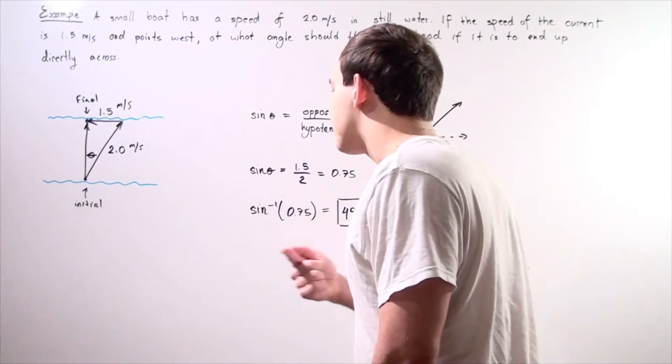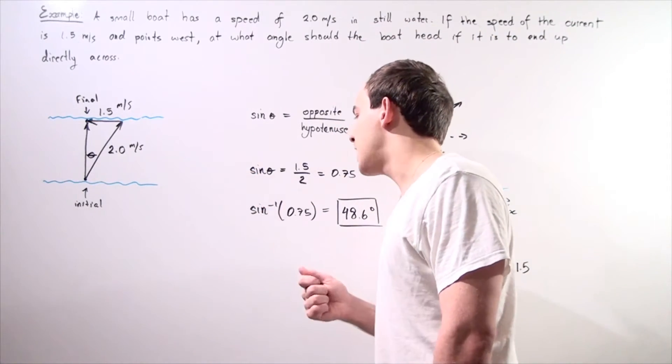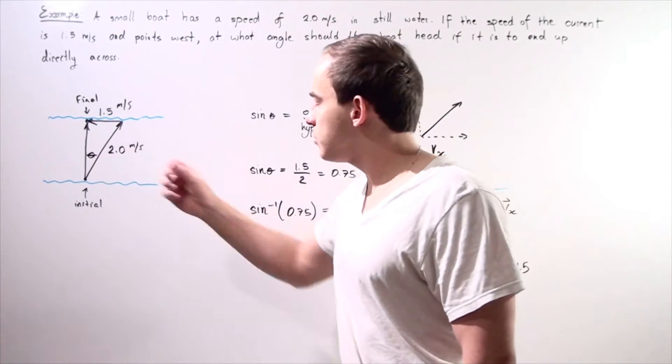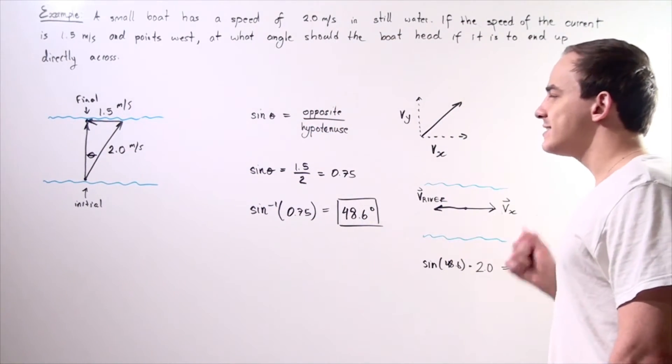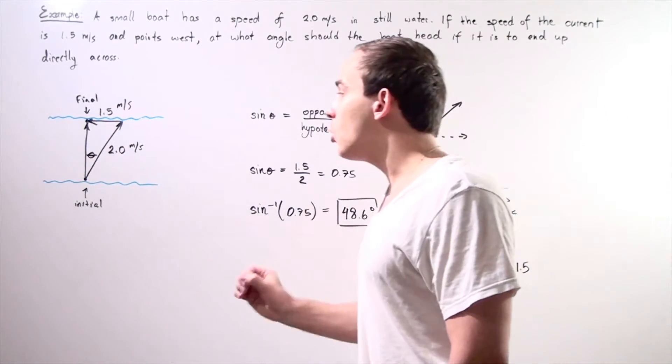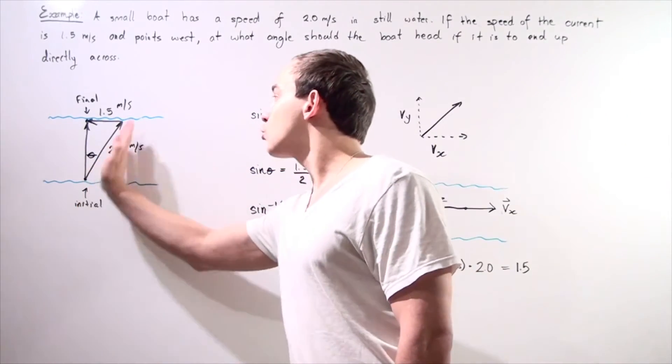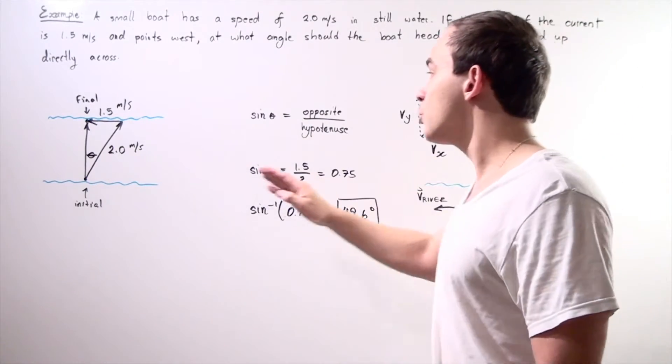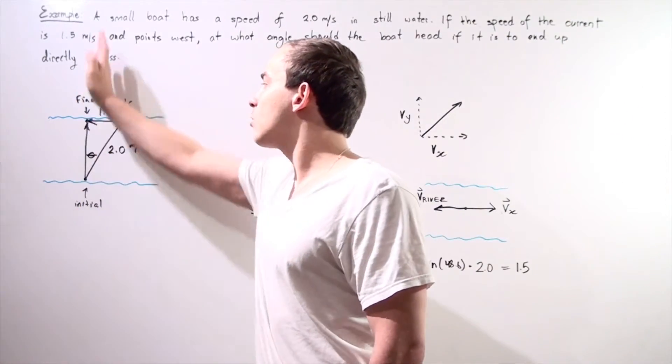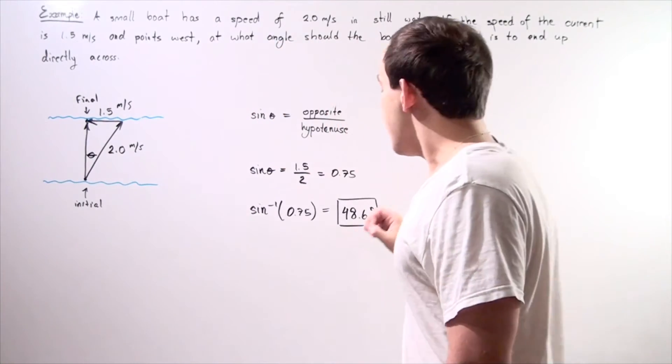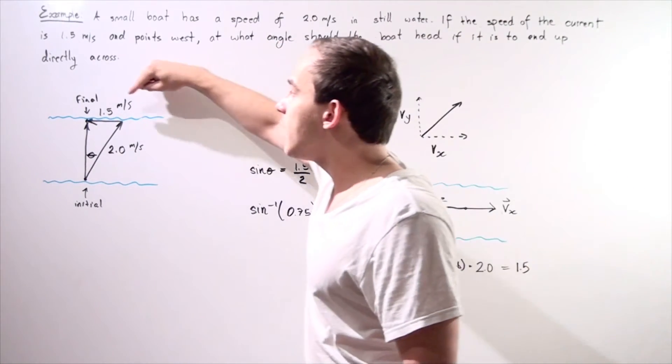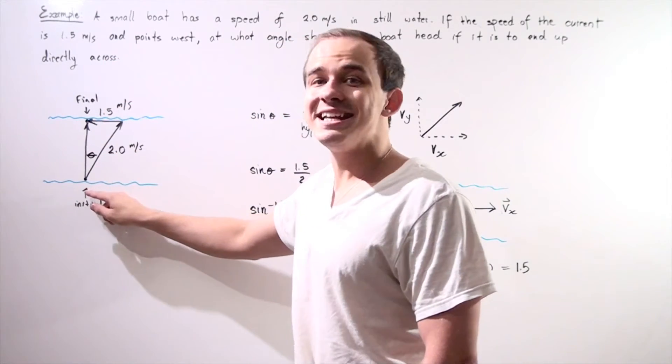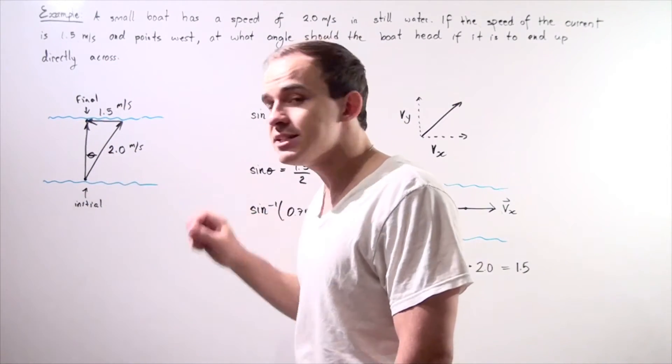We take the inverse of the sine function and we get the following angle. This angle should be approximately 48.6 degrees. If our boat heads in this direction at an angle of 48.6 degrees with respect to our vertical axis, eventually it will end up in this position directly across from our initial position.